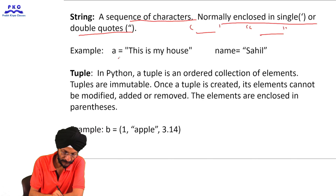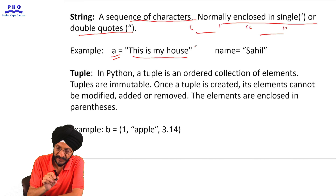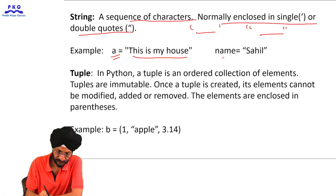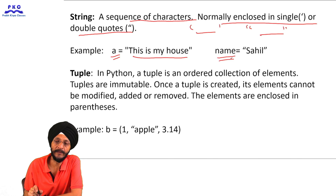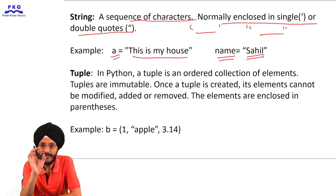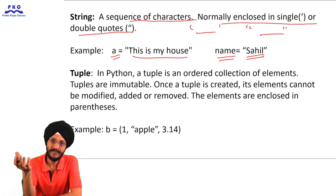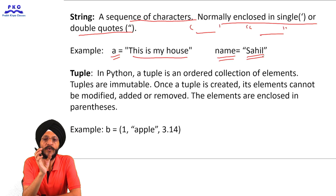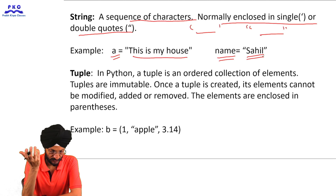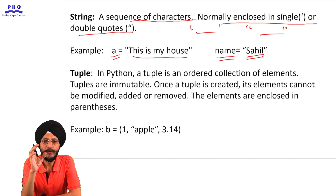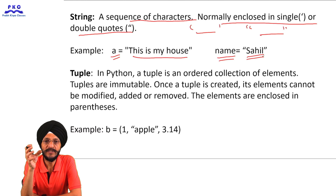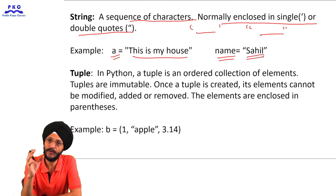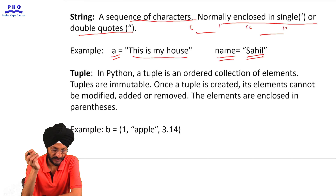For example, variable 'a' assigned 'this is my house' — this is the string enclosed in double quotes. Variable 'name' assigned 'shahil' is a string enclosed in double quotes, though single quotes may also be used. Normally it is recommended to use double quotes. If you write it in triple quotes it will also serve the purpose, but normally in Python we use double or single quotes.